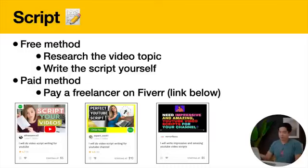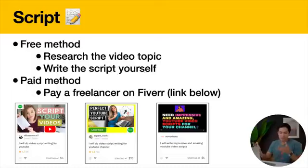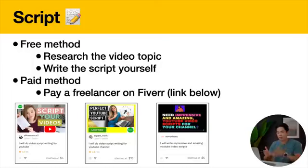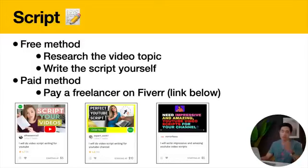Let's get into more detail on each of these. First, the script. The free method is you're going to research the video yourself, which could take anywhere between 30 minutes to five hours for most videos. Writing the script yourself is the free method because you're just trading your own time. The paid method is paying a freelancer on Fiverr — there are a lot of affordable script writers there that you can hire on a video-by-video basis. That's going to really automate the process. I will put a link to Fiverr below if you're interested in hiring someone to write your scripts.